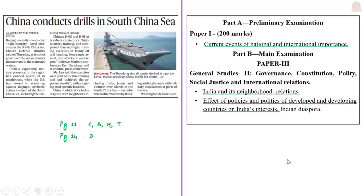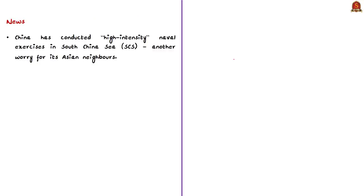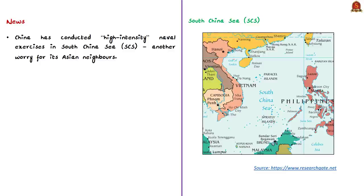The first news article states that China has conducted high-intensity naval exercises in the South China Sea, which has worried its Asian neighbors and also the United States of America. We also have a stake in this matter. In this context, we will discuss the geography of the South China Sea, the countries involved, China's expansionism, and why India has to look into these developments. The syllabus relevant for the analysis is highlighted for reference. The South China Sea is located in the Western Pacific Ocean.